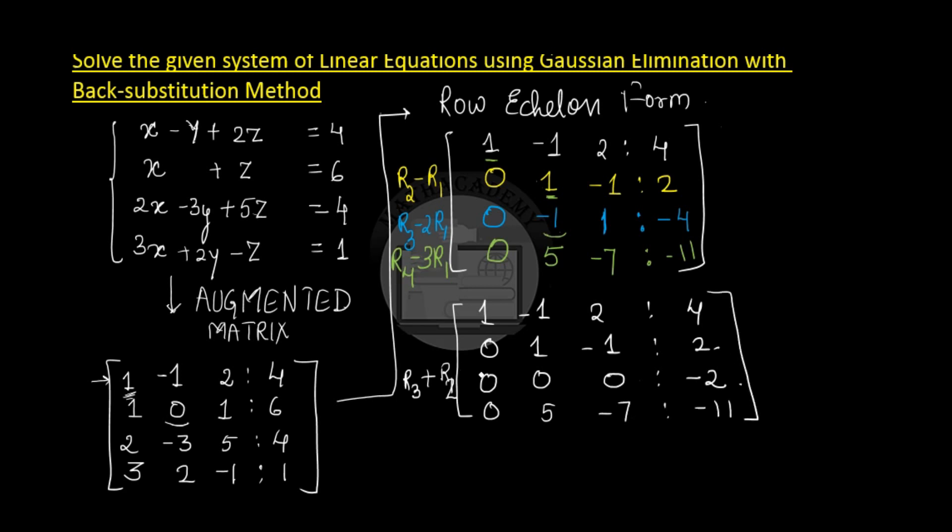Now, these four rows are nothing but the four equations. So if we try to write the equation that is corresponding to row 3, we get 0x plus 0y plus 0z is equal to minus 2.